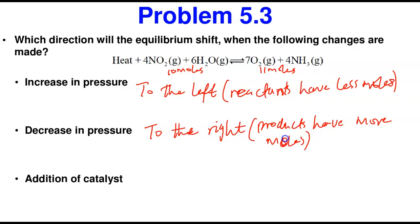The last topic is addition of a catalyst. When a system has already achieved equilibrium, addition of a catalyst has no effect. The effect of a catalyst only comes before equilibrium is achieved — a catalyst can enable equilibrium to be reached sooner. But once a system is already in equilibrium, the catalyst has no effect on that system. That is the end of this class; thank you for listening and have a wonderful day.